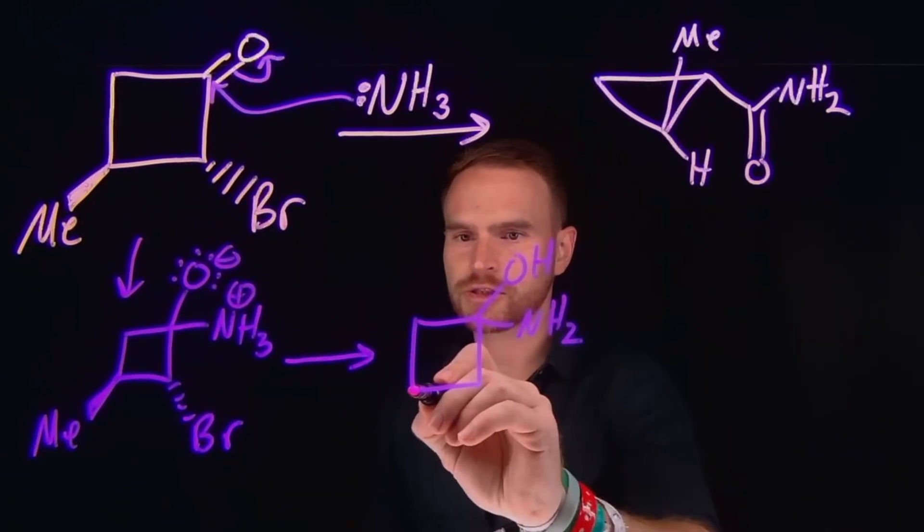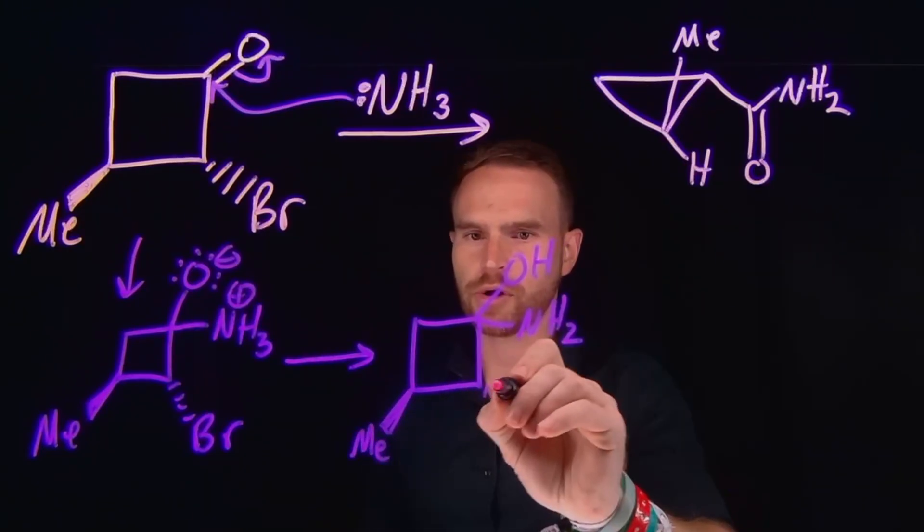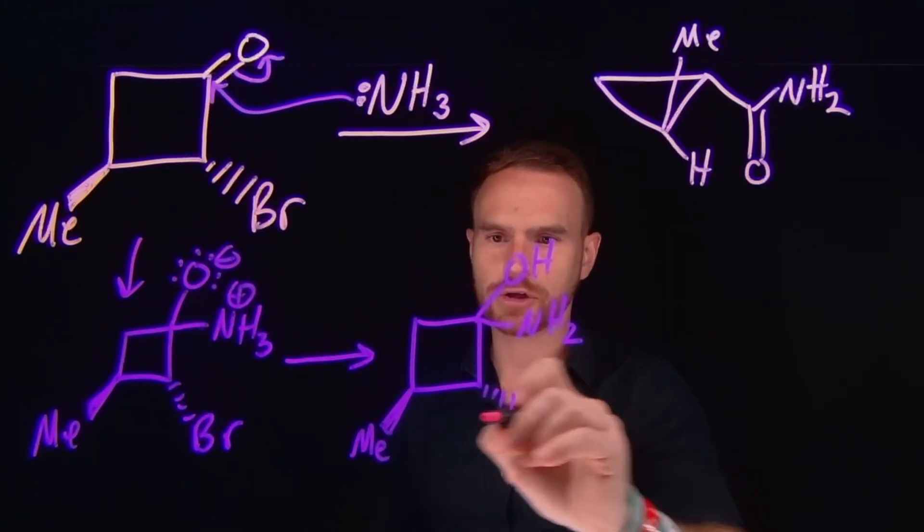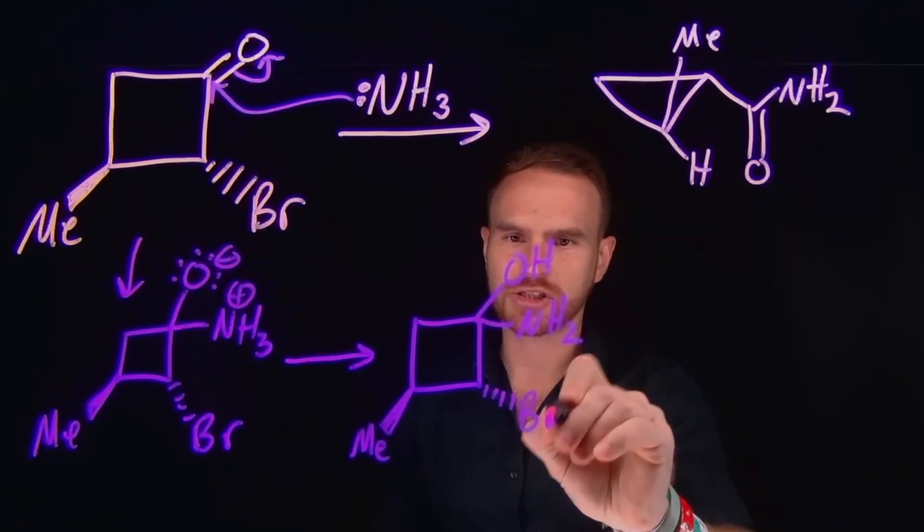and this ammonium group has now just become NH2. And then our other substituents, the methyl group and the bromide which are on opposite faces of the molecule indicated by the wedge and the dash are still present.